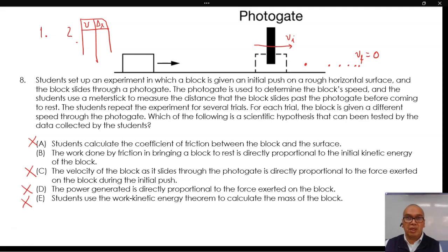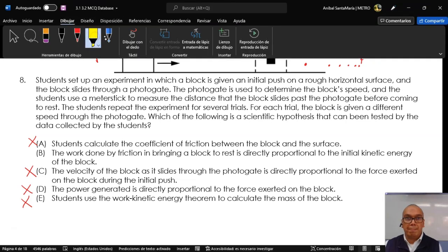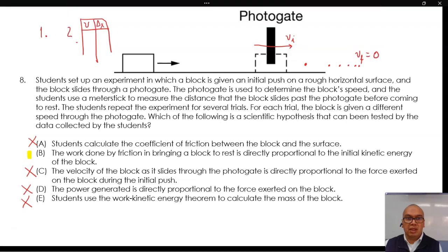In option B, the work done by friction in bringing a block to rest is directly proportional to the initial kinetic energy of the block. The work done can be calculated from the displacement of the block, and the initial kinetic energy can be calculated from the initial velocity. Therefore, this is a valid hypothesis that can be tested using this experiment.